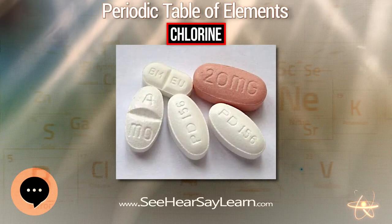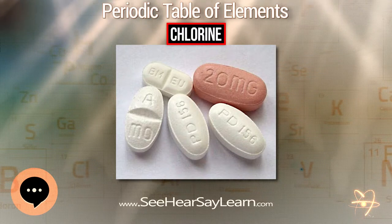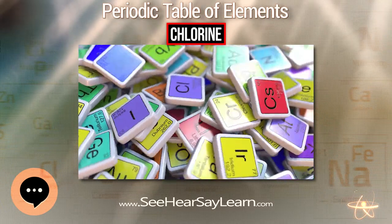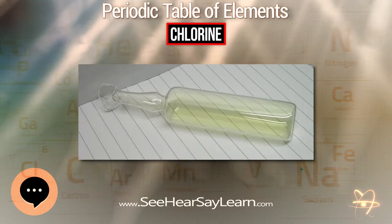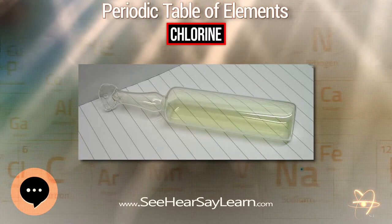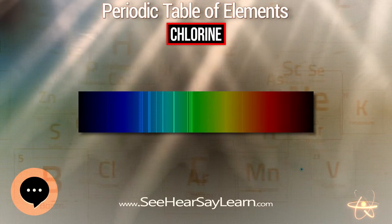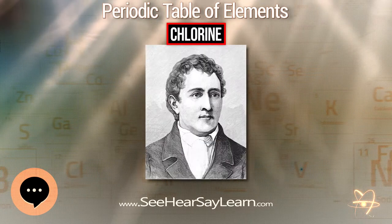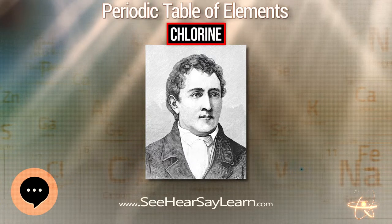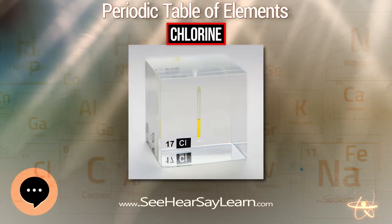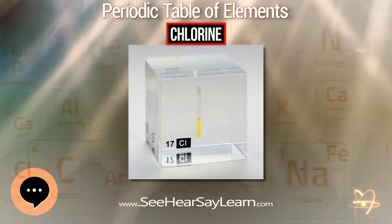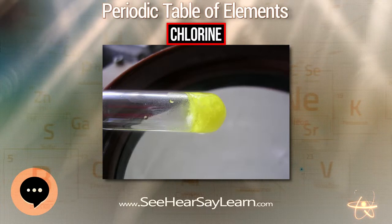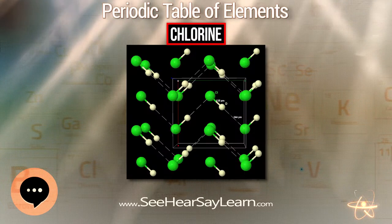At room temperature, hydrogen chloride is a colorless gas like all the hydrogen halides apart from hydrogen fluoride, since hydrogen cannot form strong hydrogen bonds to the larger, less electronegative chlorine atom. However, weak hydrogen bonding is present in solid crystalline hydrogen chloride at low temperatures, similar to the hydrogen fluoride structure. Hydrochloric acid is a strong acid because the hydrogen bonds to chlorine are too weak to inhibit dissociation. The HCl–H₂O system has many hydrates HCl·nH₂O for n = 1, 2, 3, 4, and 6.